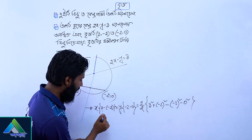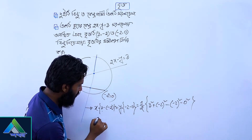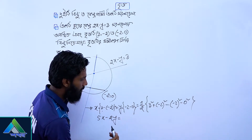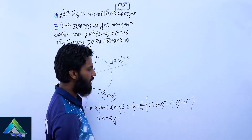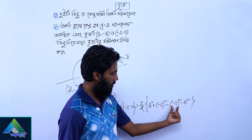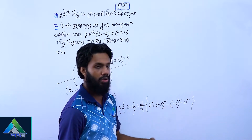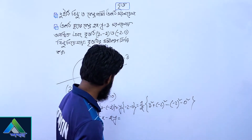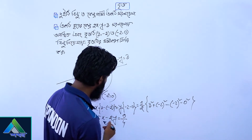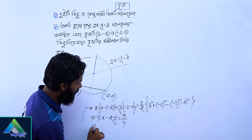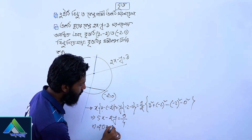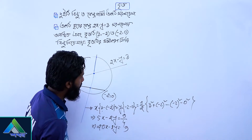That is b. 3 minus minus plus 2. 5x minus 2y. That is b equals 4. Negative minus 4. 9 by 4. 20x minus 8y is equal to 9.